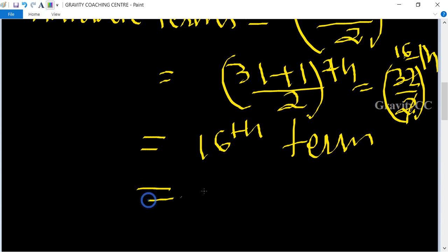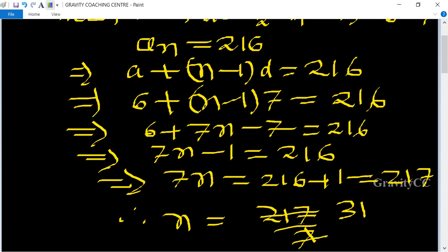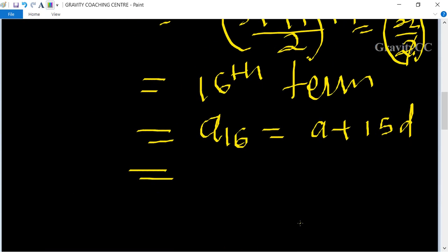So 16th term means a16 and we know that a16 means a plus 15d. So now we put the value of a and d, a equal to 6 and d equal to 7, 6 plus 15 into 7.